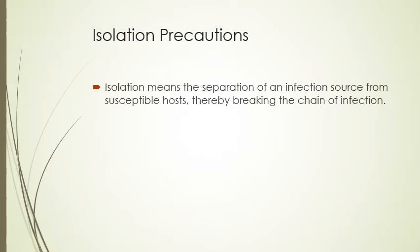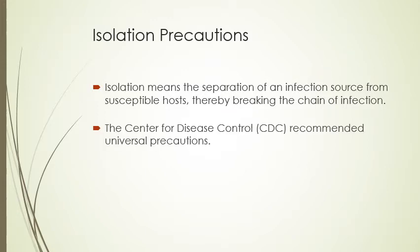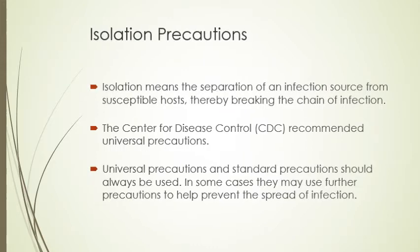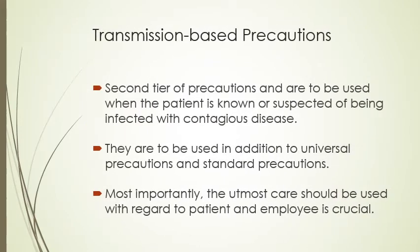Isolation precautions mean the separation of an infection source from susceptible hosts, thereby breaking the chain of infection. The CDC recommends universal precautions, and remember that universal and standard precautions should always be used — just because somebody is on isolation doesn't mean we only use PPE. There are transmission-based precautions as the second tier, used when a patient is known or suspected of being infected with a contagious disease, always on top of universal and standard precautions.